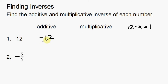So, 12 times what is going to give me one? Well, 12 times one-twelfth is going to get me one. If I have 12 on top and then 12 on bottom, those are going to cancel to get me one. So one-twelfth is your multiplicative inverse.